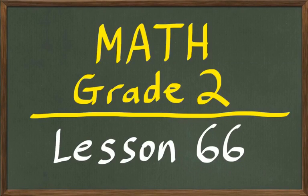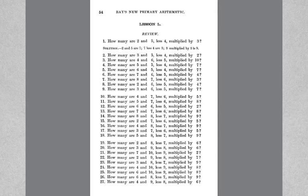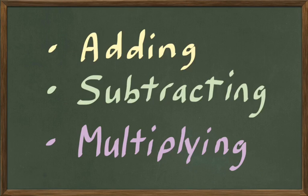Welcome to another week of lessons in math grade 2. We're doing lesson 66 today. This week of lessons is going to be kind of different. We're basing it on our book lesson 50, which is a review lesson of all the work we've been doing so far in addition, subtraction, and multiplication. So what we're going to be doing this week is practicing adding, subtracting, and multiplying.